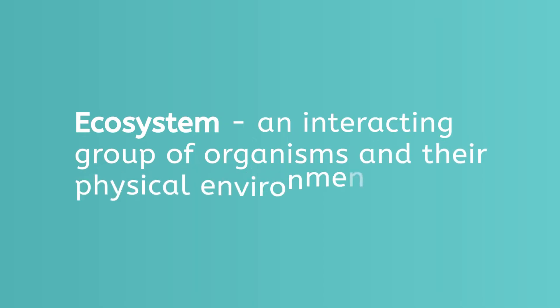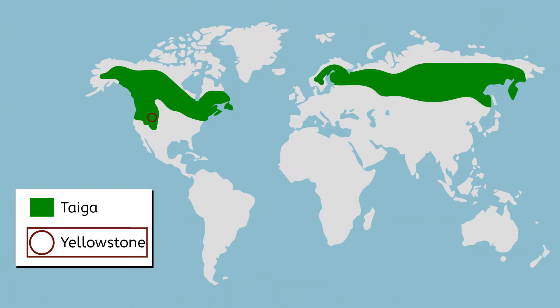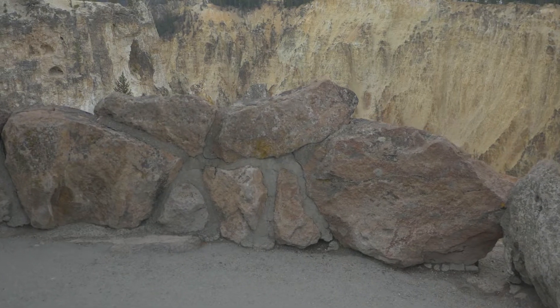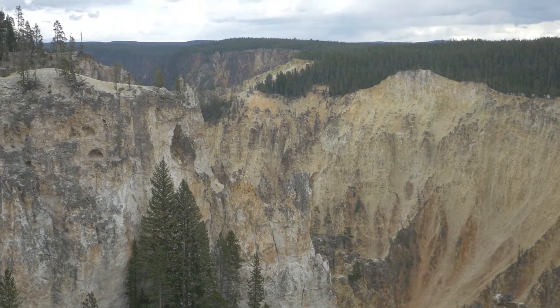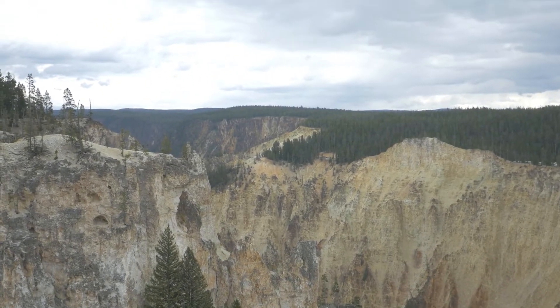Let's pause for a moment. What is an ecosystem? And why did the park rangers think they were helping it by eliminating the wolves? An ecosystem is an interacting group of organisms and their physical environment. We can think of it like a small part of a biome. The taiga biome goes across all of northern North America, but the Yellowstone ecosystem is an area of approximately 20 million acres in the states of Wyoming, Montana, and Idaho. Why would park rangers think that killing the wolves would help this particular ecosystem?